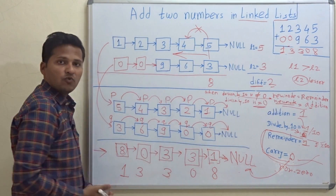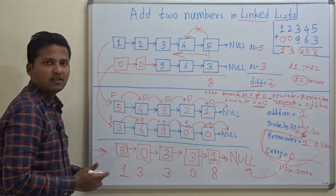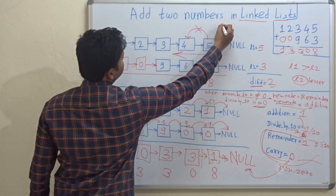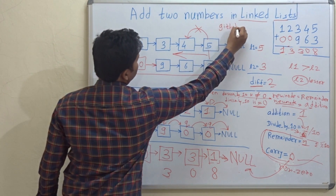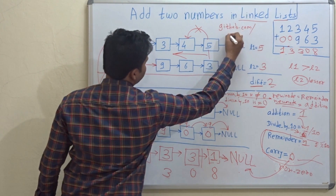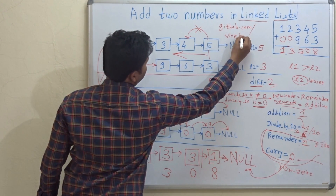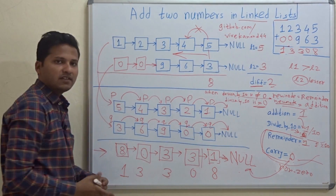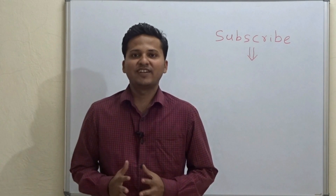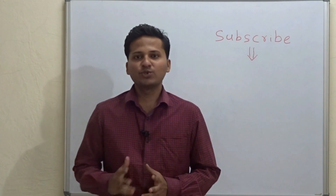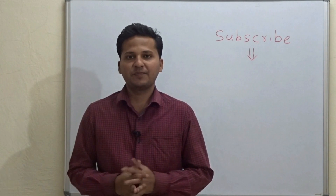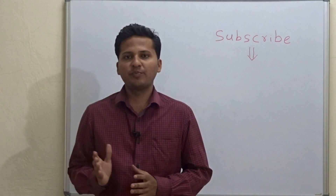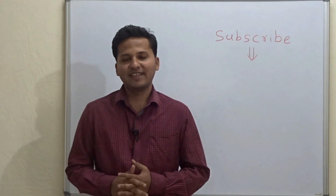This is how we add two numbers represented by a linked list. You can get the full code at github.com/vivekananda44. Just check the link and get the full code. Please subscribe to my channel as I post algorithm videos every day. If you want a video on any particular topic, please mention it in the comments below. Thank you.